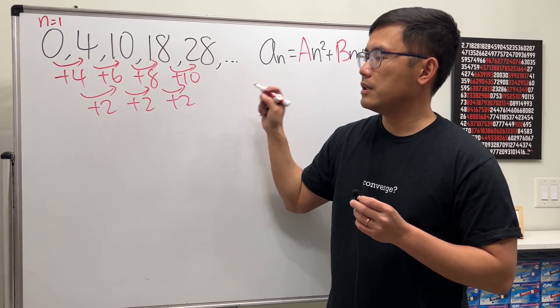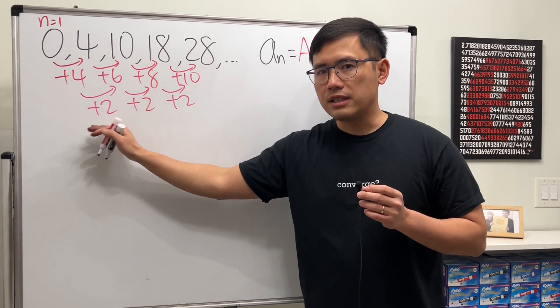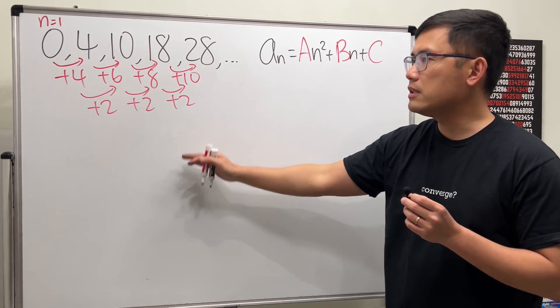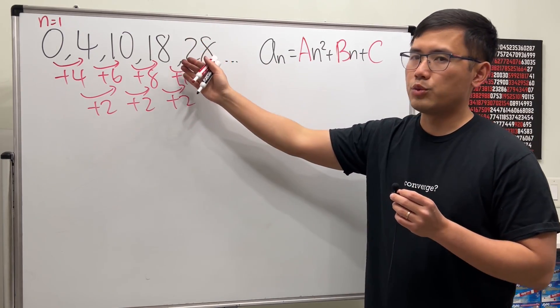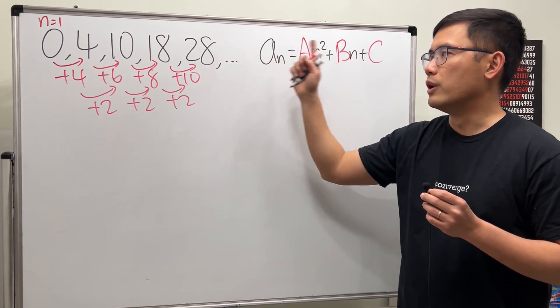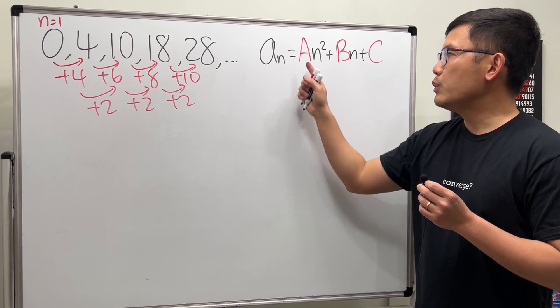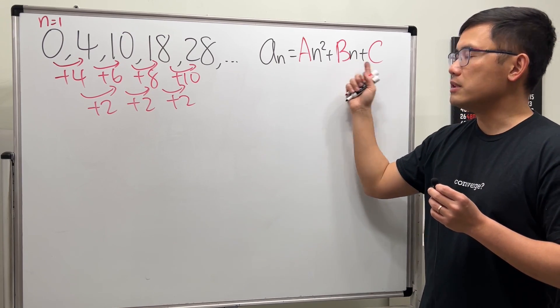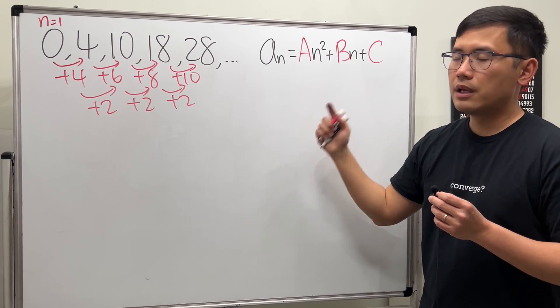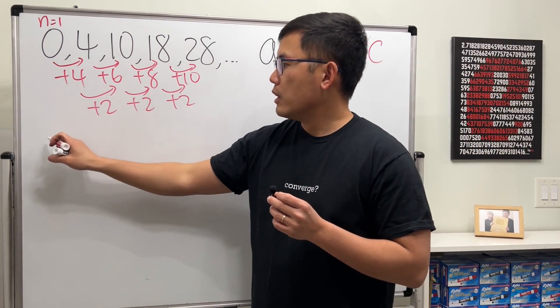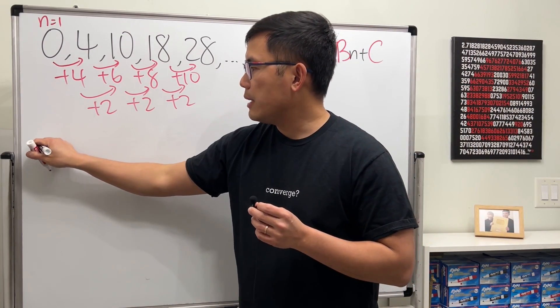Because the second level difference is a constant, we know this is definitely a quadratic sequence. We have to find the a, b, and c values, so here we go.